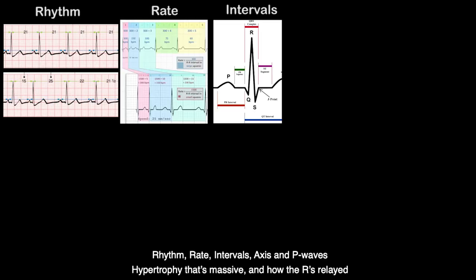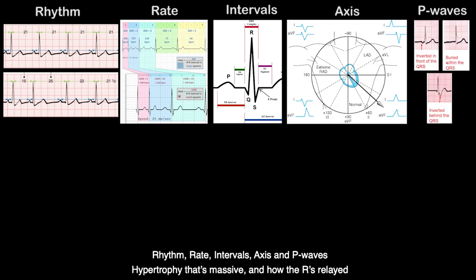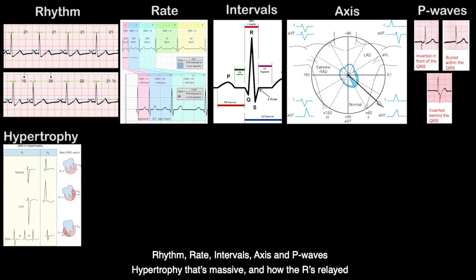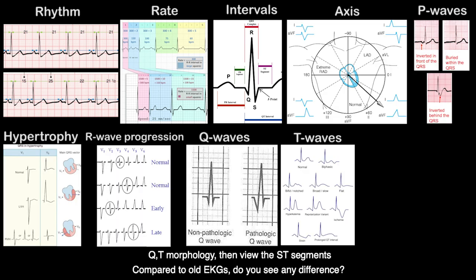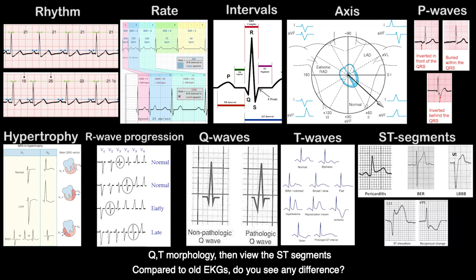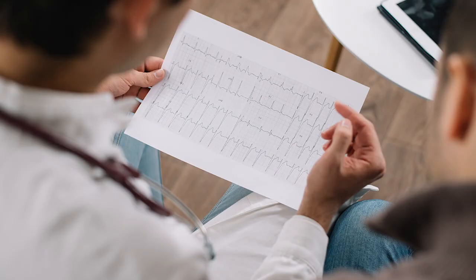Rhythm, Rate, Intervals, Axis, and P-Waves. Hypertrophy that's massive and how the R's relate. QT morphology then view the ST segments. Compared to old EKGs, do you see any difference?